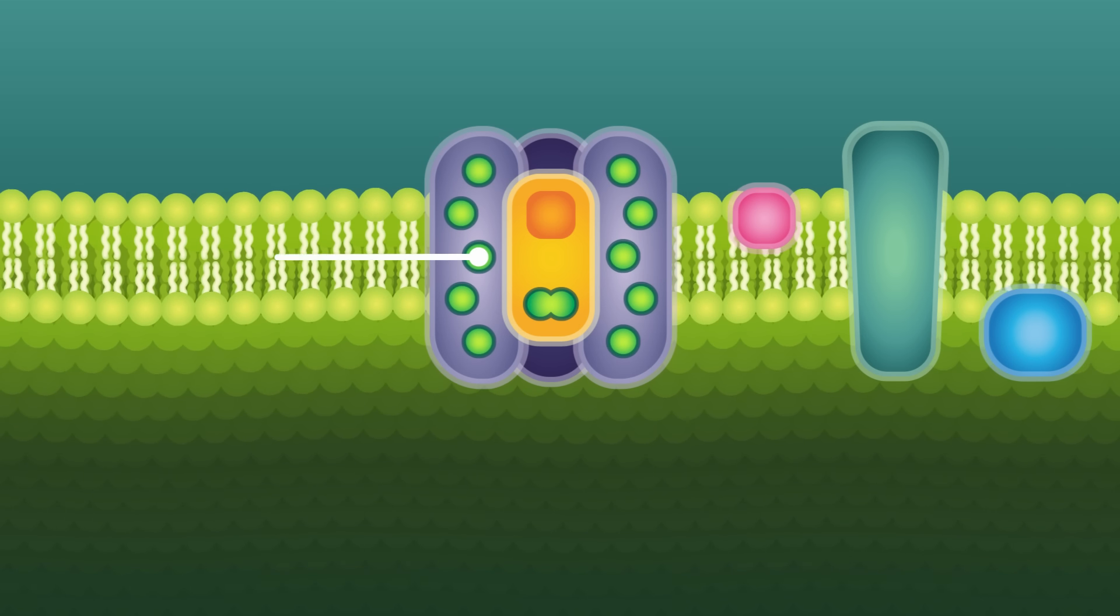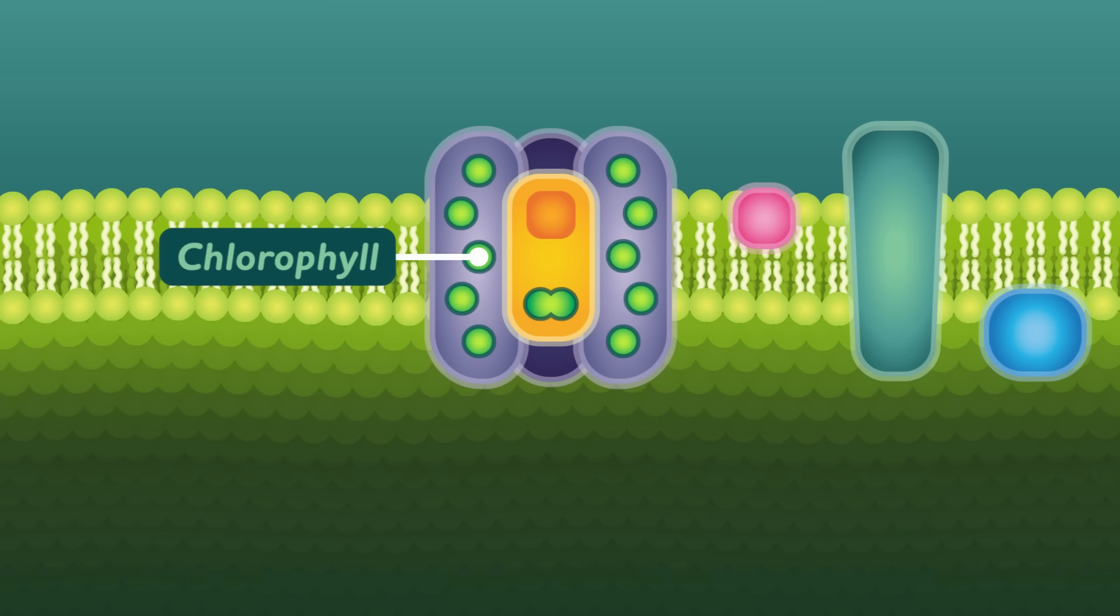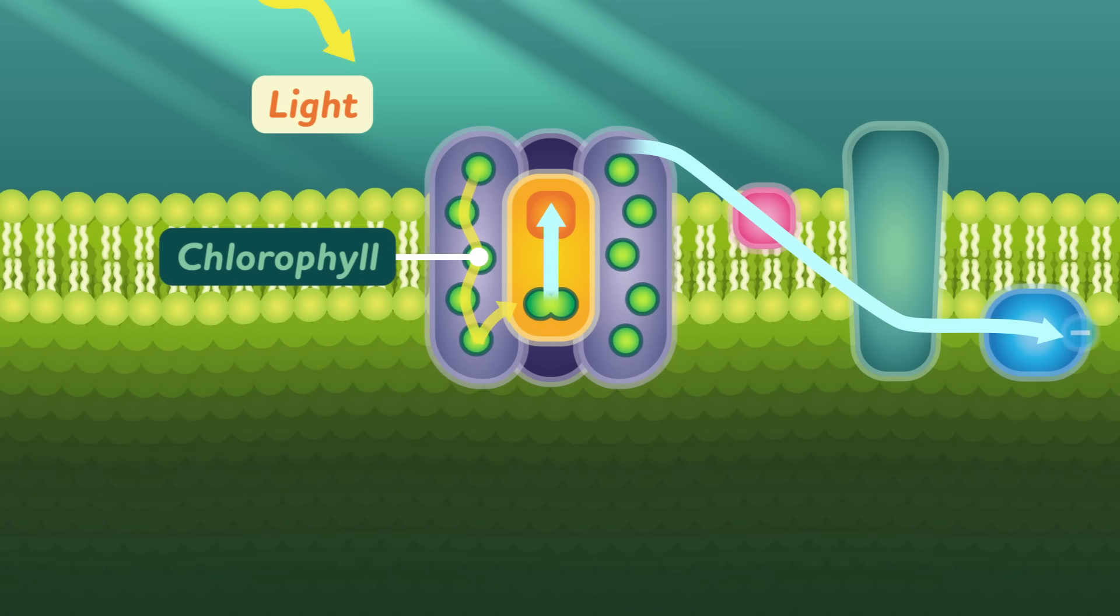But it's not just about looks. When sunlight hits chlorophyll, it energizes the chlorophyll's electrons, kicking them up to a higher energy level. As the energy builds up, two electrons are separated from the chlorophyll and move on to prepare for the next act.